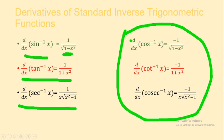For the co-functions on the other side, you just have to put a minus sign. For whatever formula there is for sine inverse, just put a minus sign and you get the answer for cos inverse. For tan inverse, put a minus sign and you get cot inverse. For sec inverse, put a minus sign and you get cosec inverse. So that's simple.